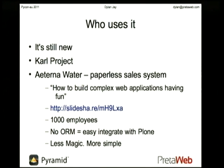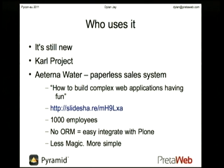So who uses it? Pyramid is still new. There's a thing called the Carl project — they used BFG and Pyramid and it has quite a number of users. One of the reasons they used Pyramid was because it doesn't have an ORM — it's what they call a non-opinionated framework. They wanted to have content management coming out of Plone, and used the lightweight stuff using Pyramid. The real advantage is that they could use SQLAlchemy for both, have the same models in both — the technology integration was pretty seamless.